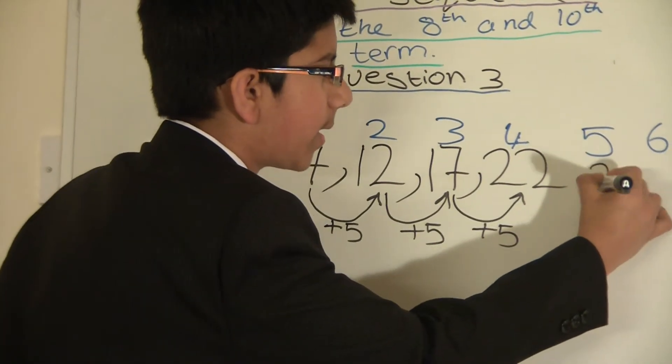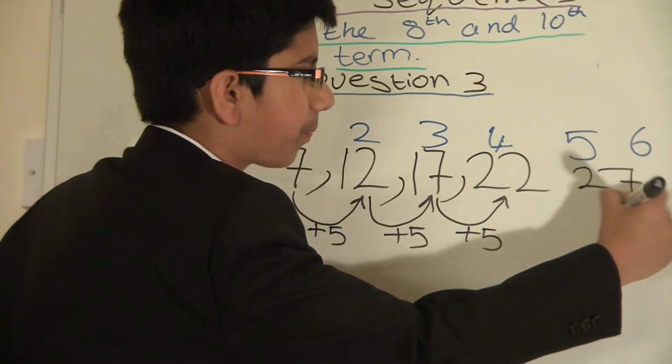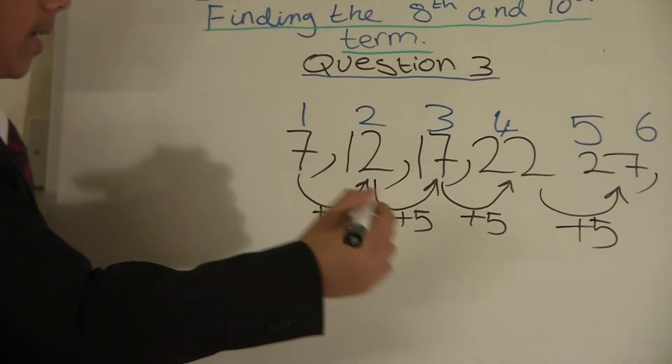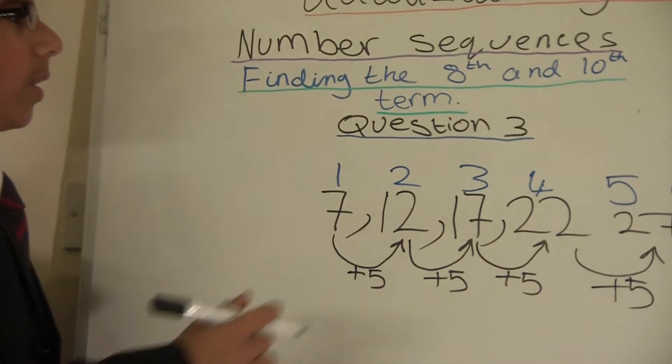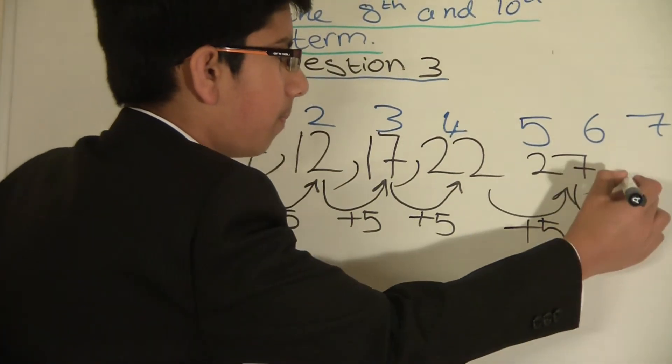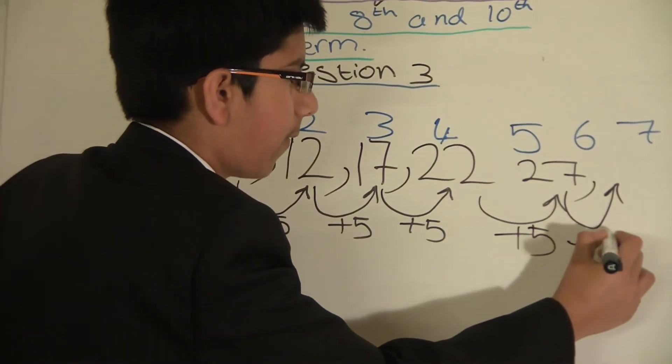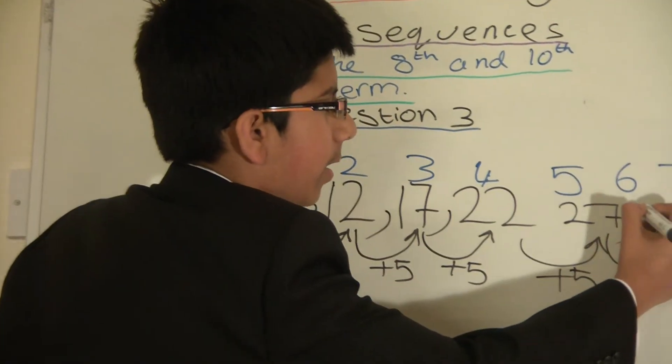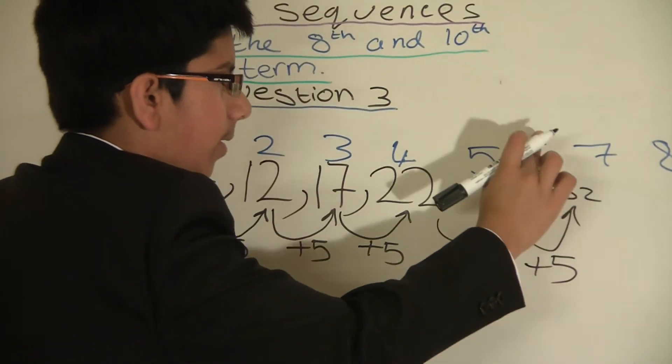Let's do that 2 more times so we can find the 8th term. So 27 plus 5, we get 32. So write down 32 for the 6th position.